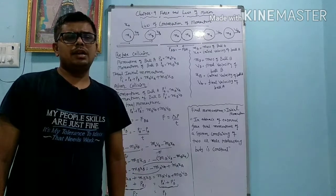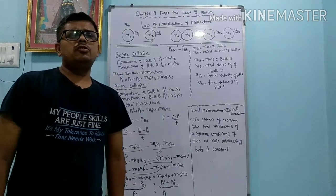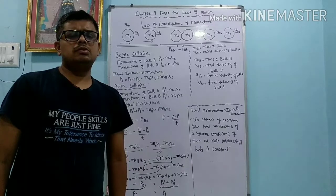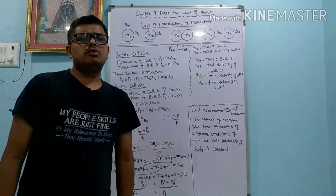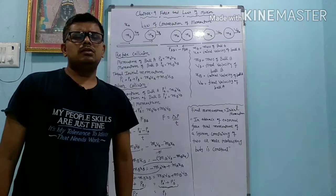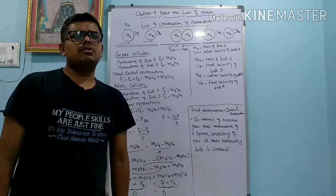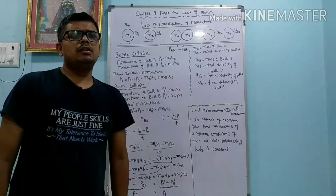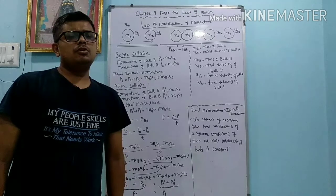Newton's second law — three definitions are there. The rate of change in momentum is directly proportional to force. Second definition: the product of mass and acceleration is called the force. Third definition: to produce one meter per second square acceleration in one kilogram of object, whatever force is applied is one Newton force.